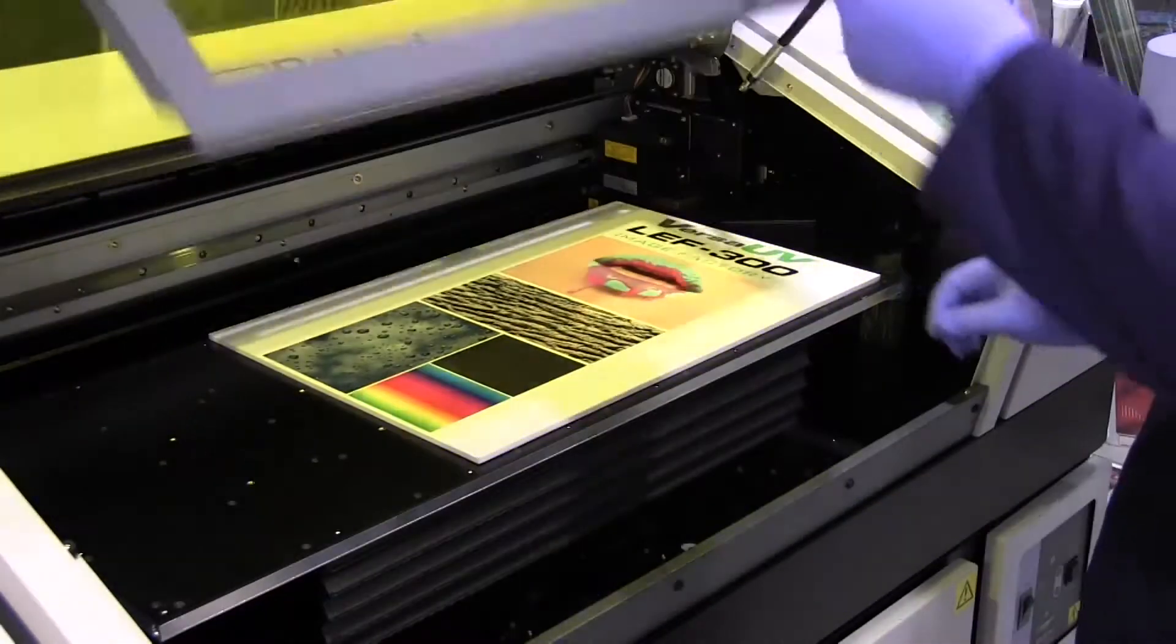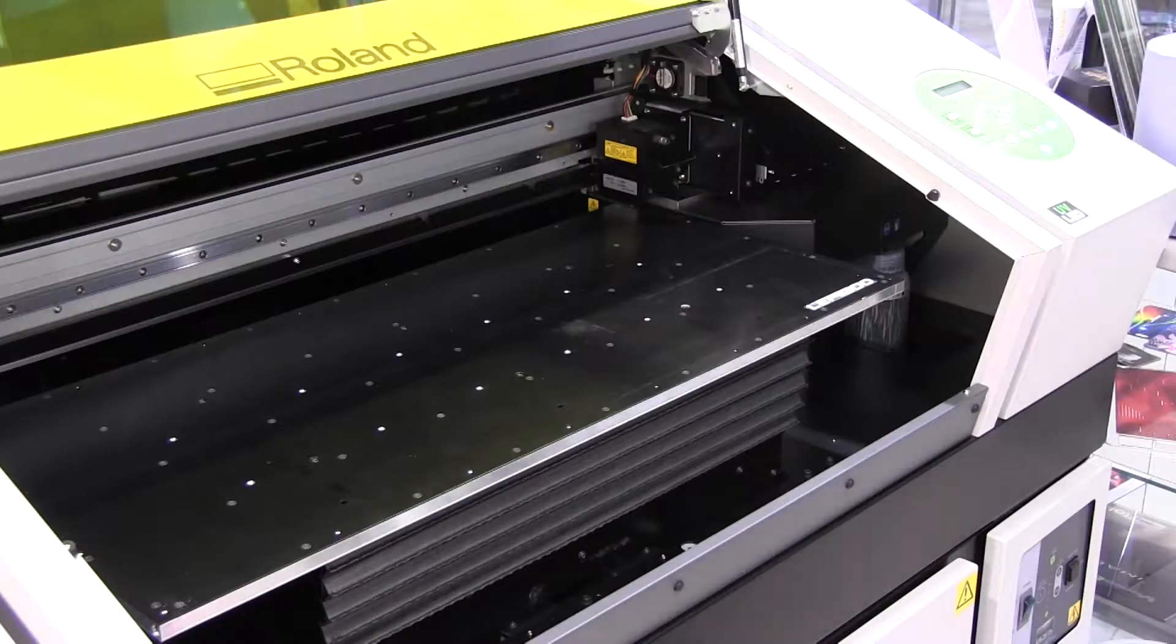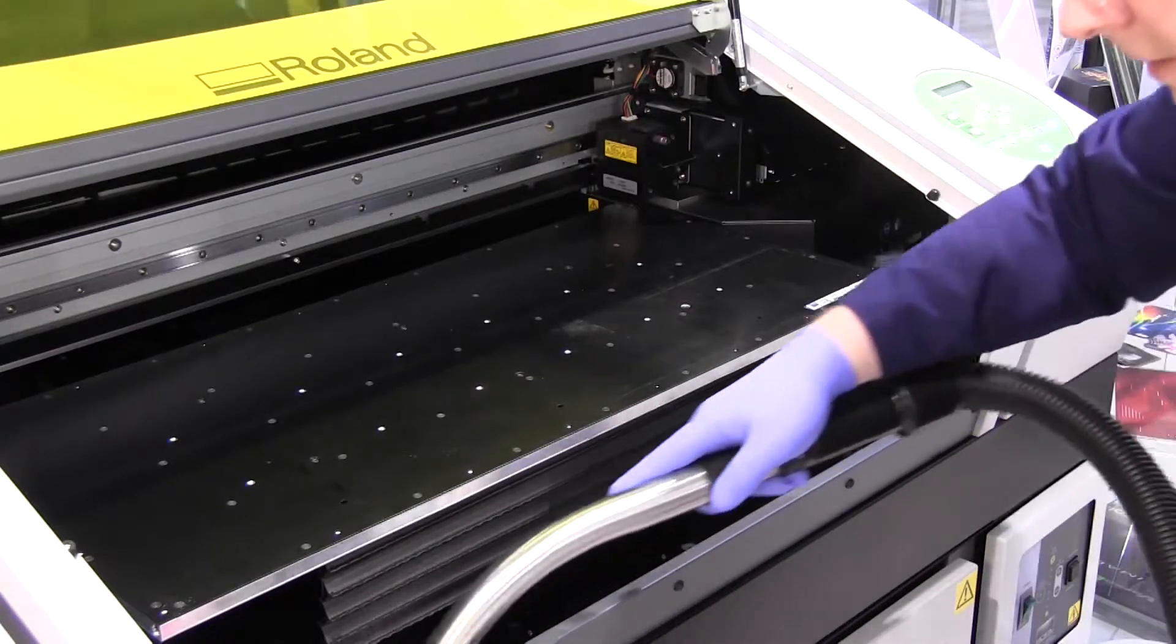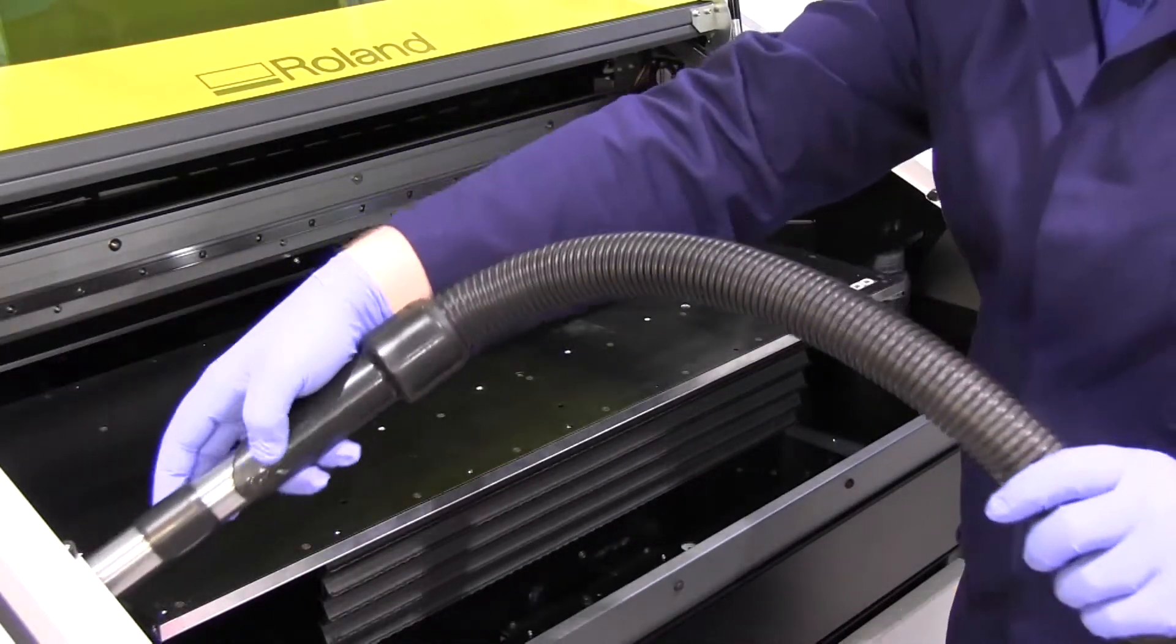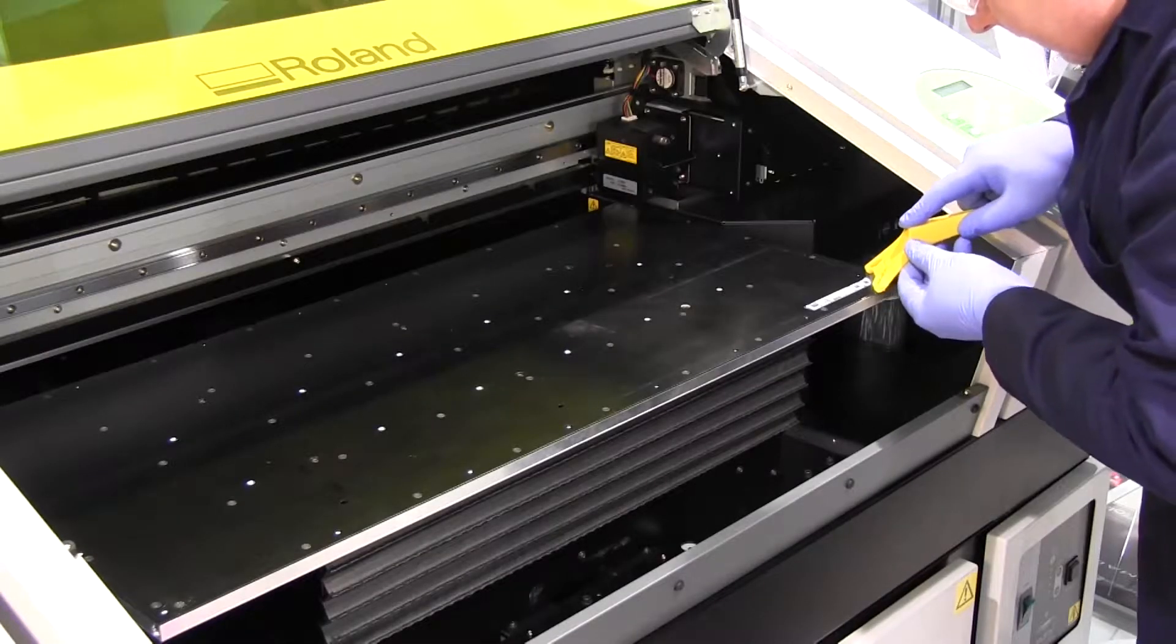First of all, remove any media that is in the machine. Next we are going to need to clean all of the surfaces within the device. For this you could use a vacuum or a tack cloth that will help to pick up any settled dust or loose particles.